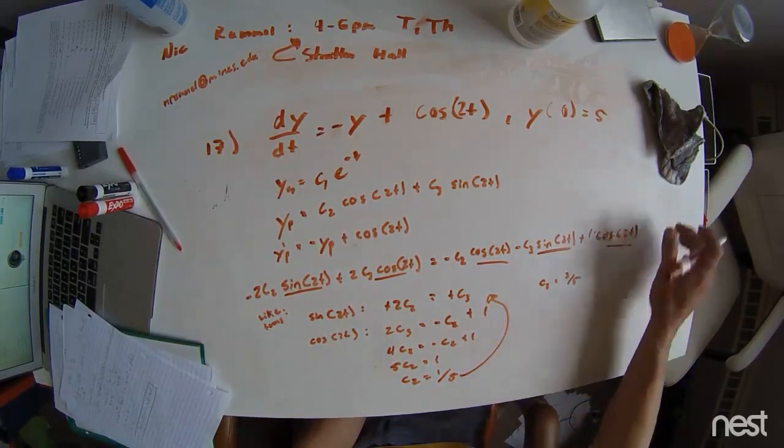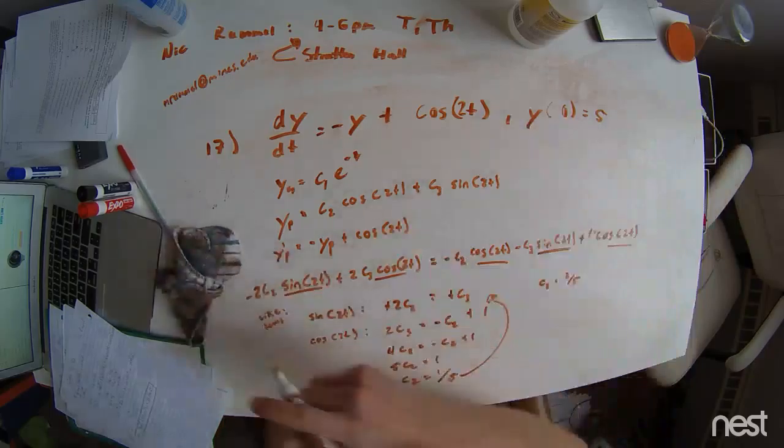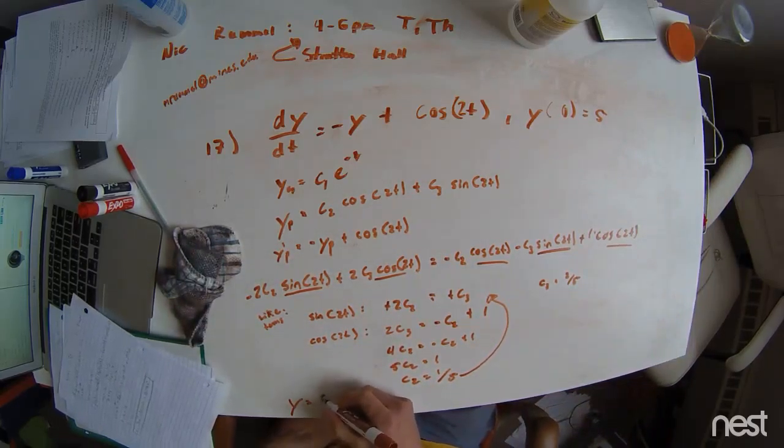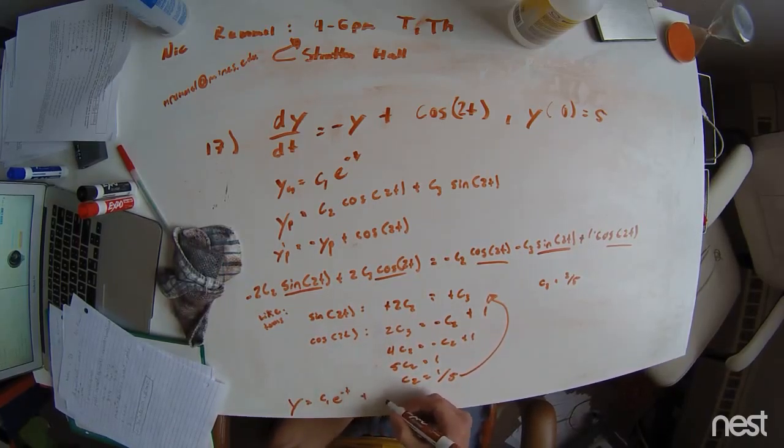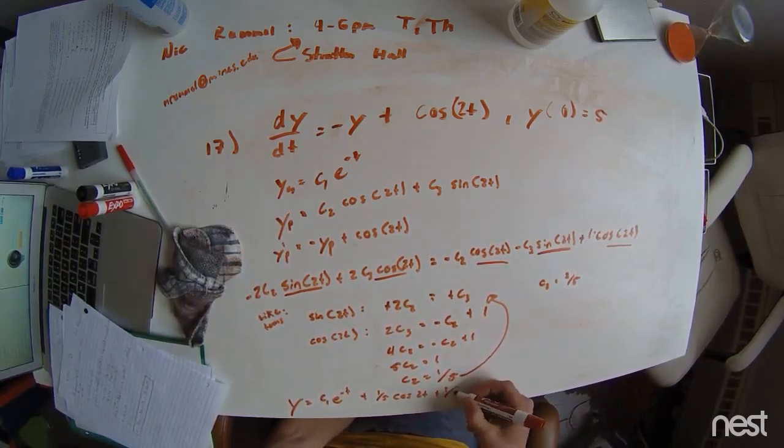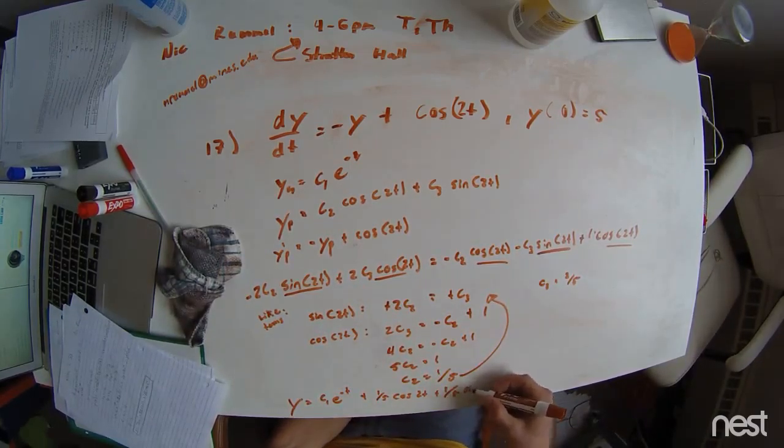Alright, we're going to have to create some space, but basically what we're seeing now is that we have y equals c1 e to the negative t plus 1 fifth cosine of 2t plus 2 fifths sine of 2t.